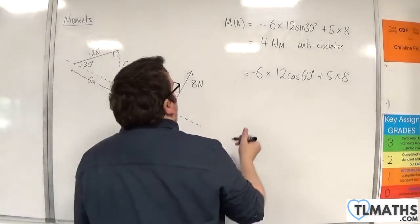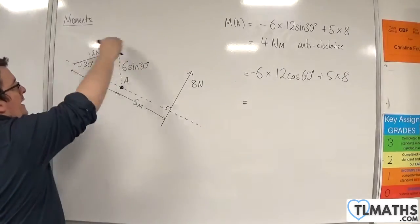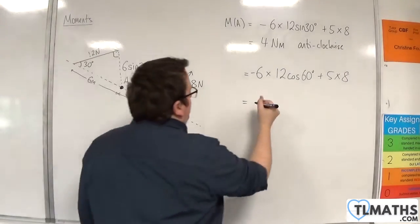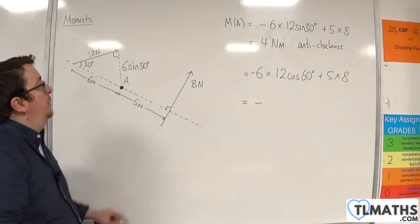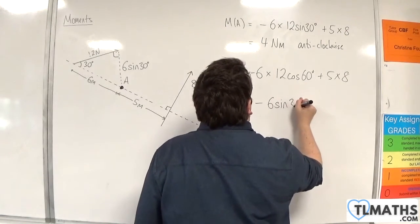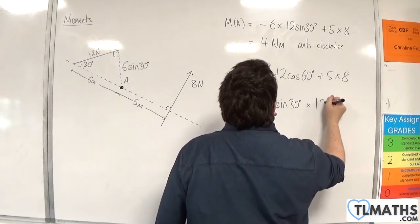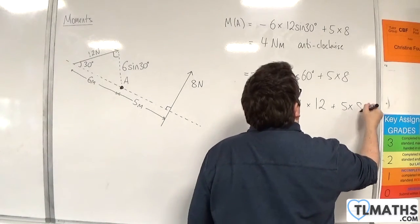So what we do is we then think, OK, well, that's still going round in a clockwise motion, so it's still negative. And the distance away from the 12-newton force is 6 sine 30. So it's minus 6 sine 30 times by the 12-newton force plus 5 times 8.